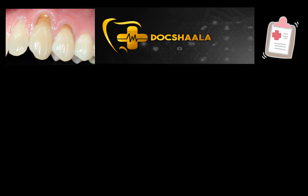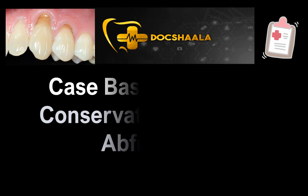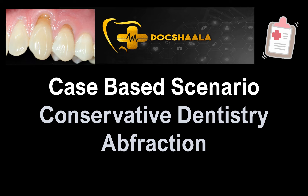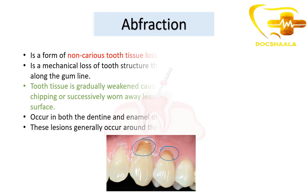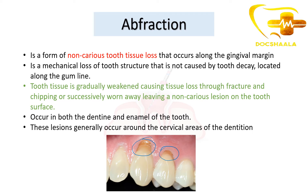Hello doctors, this is Dr. Janvi. Welcome back to the series of case-based scenarios. In this video we are going to see about abfraction lesions from the subject of conservative dentistry. Abfraction is a non-carious tooth tissue loss that occurs along the gingival margin, as you can see here. It is a mechanical loss of tooth structure not caused by tooth decay, located along the gum line.